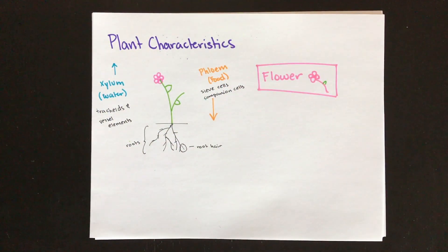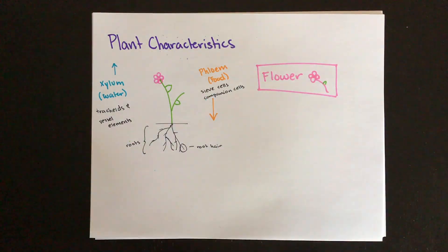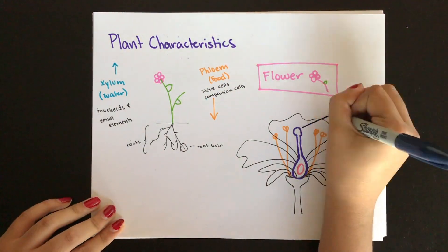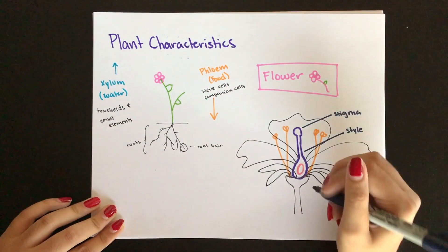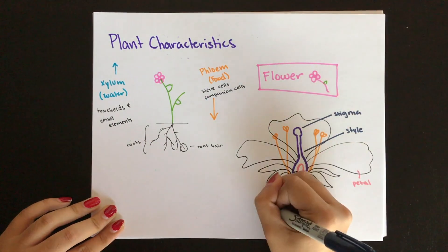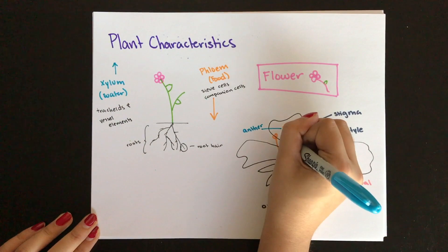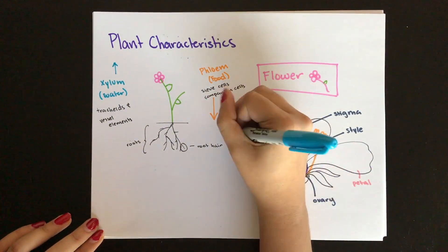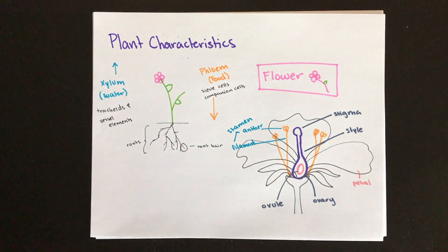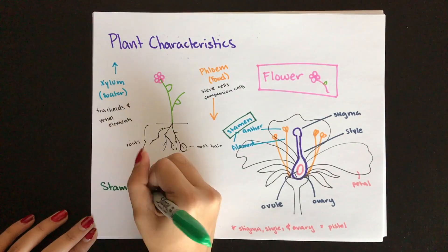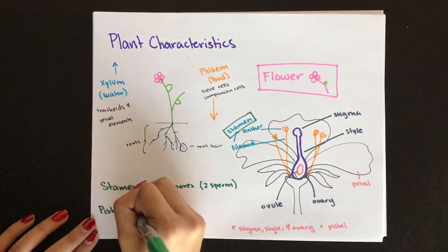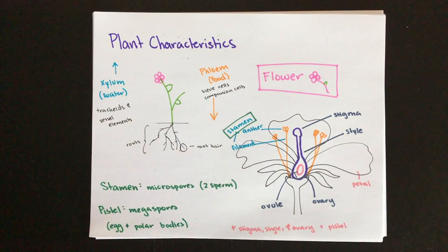Now we're going to begin to break down the different components of the flower. We'll start with the female component which includes the stigma, style, ovule, and ovary. The stamen is the male component and it includes the anther and the filament. The anther makes pollen which is made up of microspores, and within the ovary is the ovule which forms megaspores that can divide to form eggs and polar bodies.